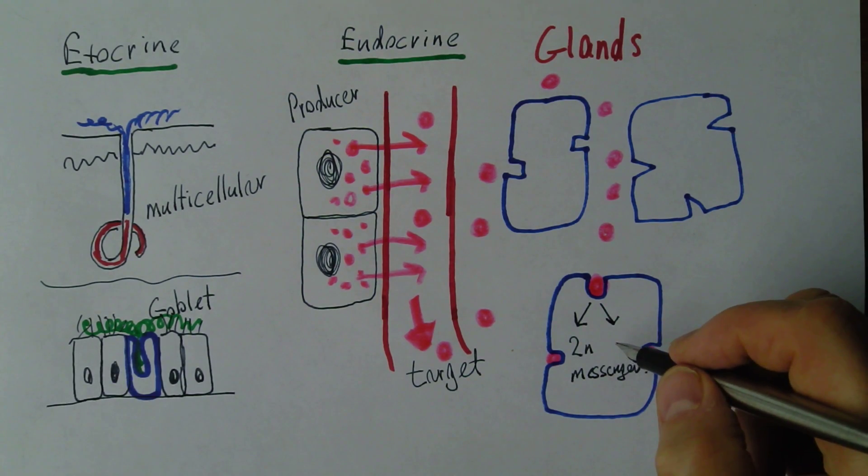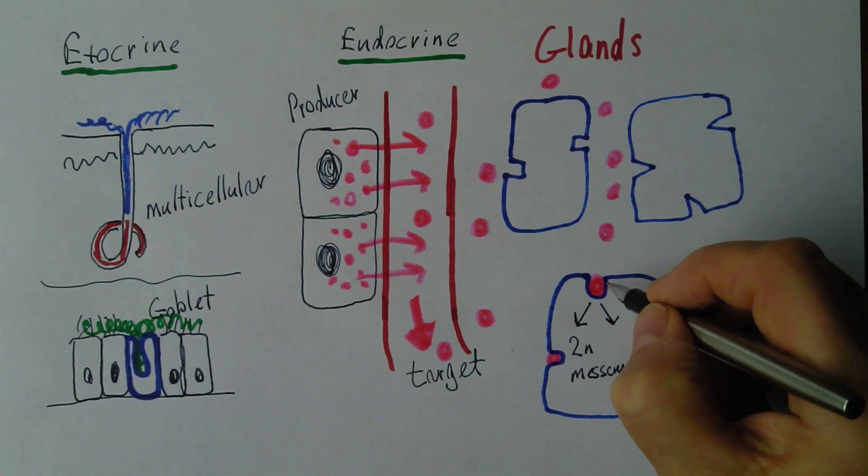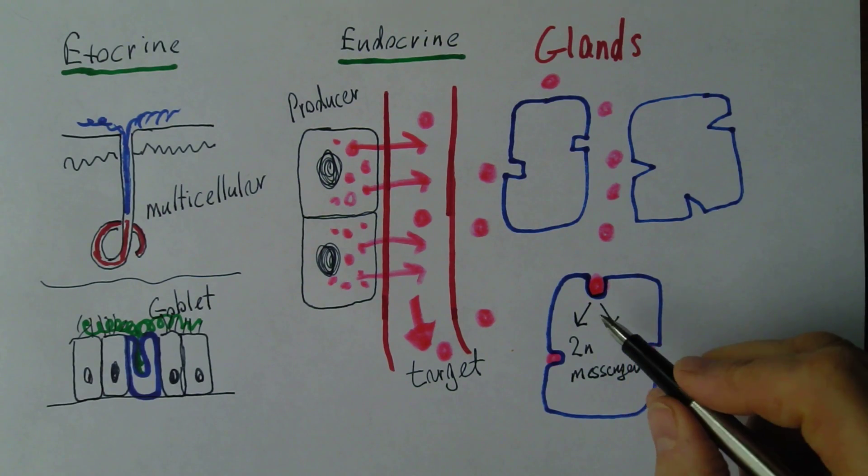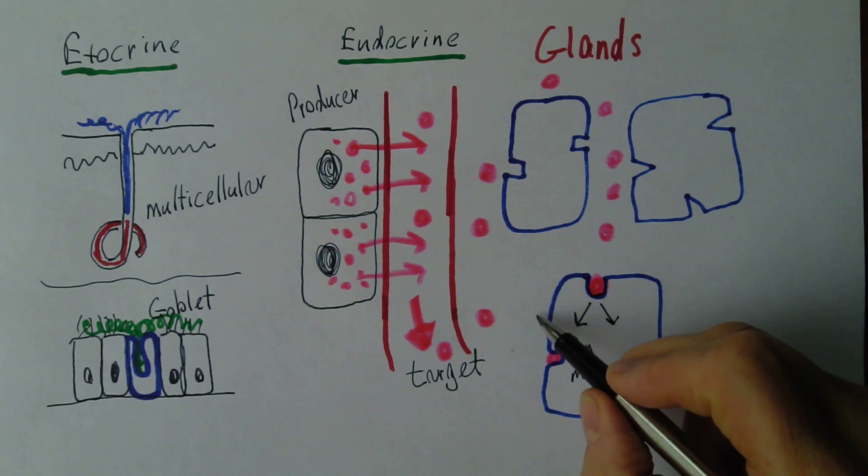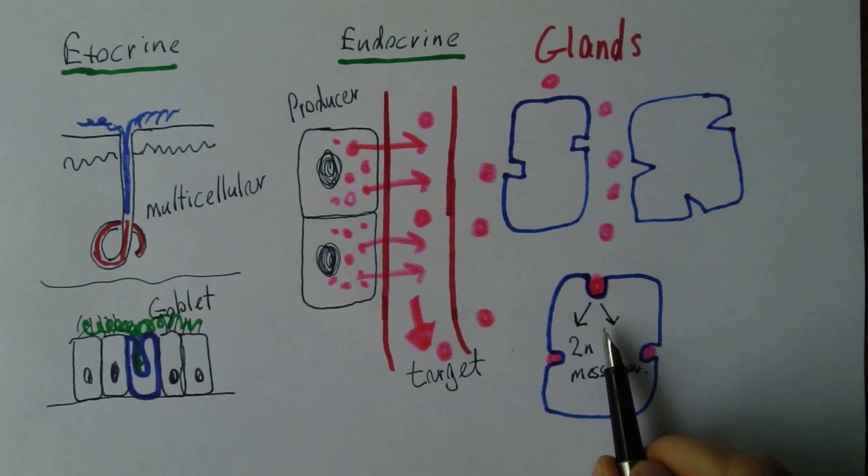And that will bring about some physiological change inside the cell. So for example, if this signal molecule was insulin and this was an insulin receptor, then that would increase the permeability of this cell membrane to glucose, and glucose will go from the tissue fluids into the cells.